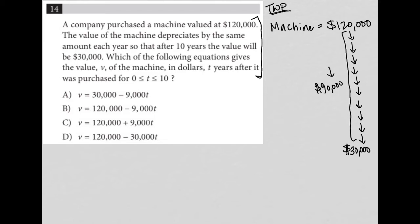And if the question says it depreciates by the same amount each year, then I know that with 10 of these arrows, it must be $9,000 per year. Each of these years, it went down by $9,000. That's the only way to get to $90,000 for those 10 years.